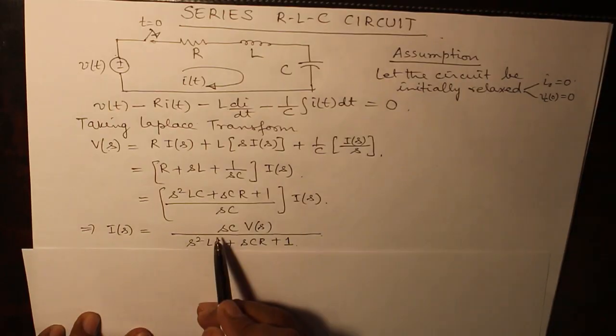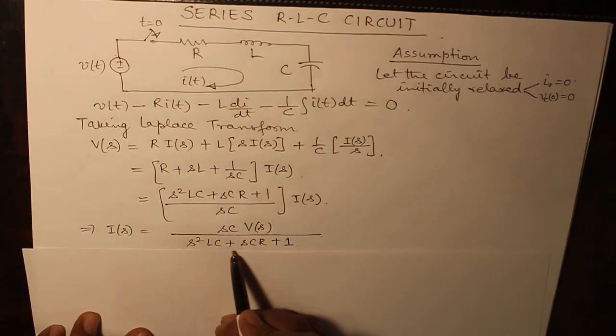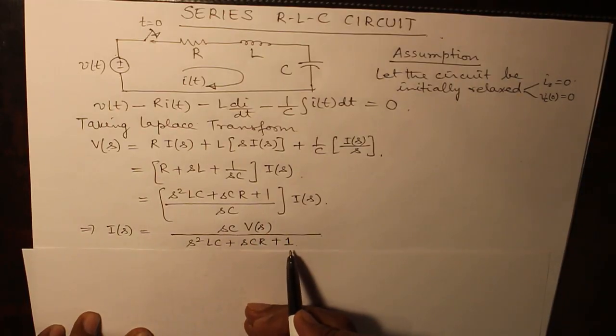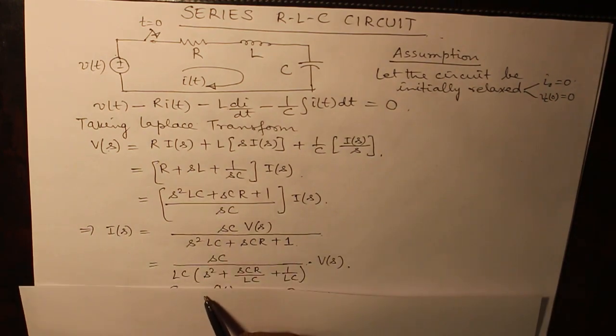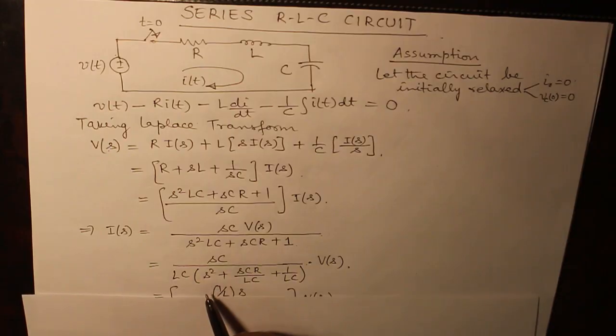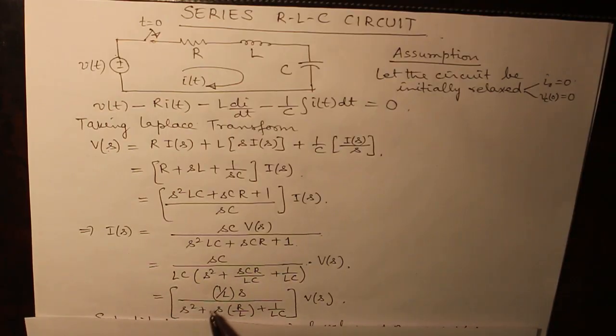Which can be clubbed together: R plus s*L plus 1 over sC into I(s), and when we write I(s) as sC*V(s) over s²LC plus sCR plus 1. Our aim is to find out an expression in terms of s² with coefficient being made unity. So we take out LC common. C gets cancelled and we have 1 over L into s divided by s² plus s*R/L plus 1 over LC into V(s).